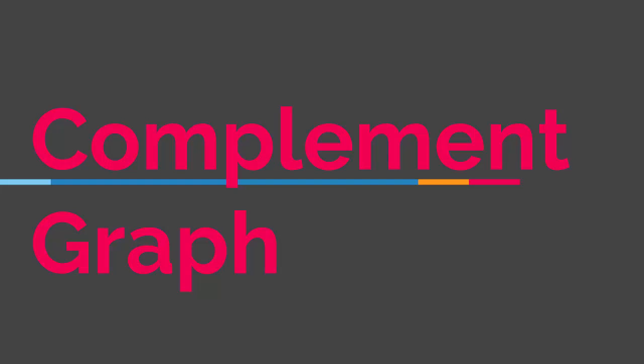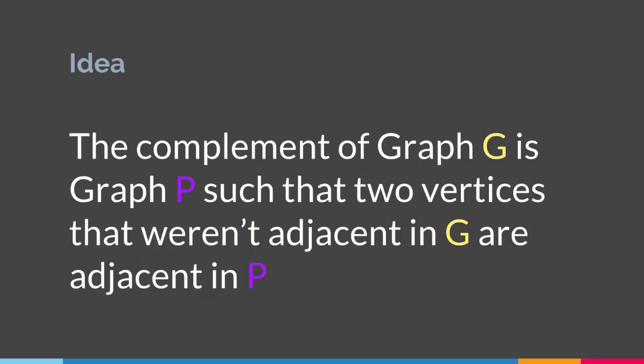In this lecture we'll talk about the idea of a complement graph. So what is a complement graph? The idea is that if we have a graph G, the complement of graph G is graph P such that two vertices that were not adjacent in G are adjacent in P. Before I explain what this means, we have to define what adjacent means.